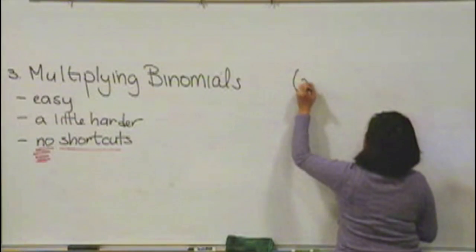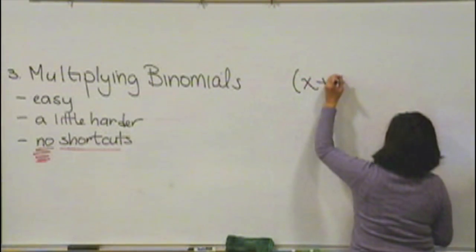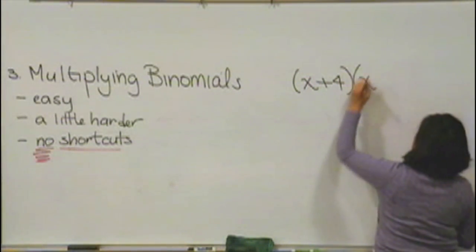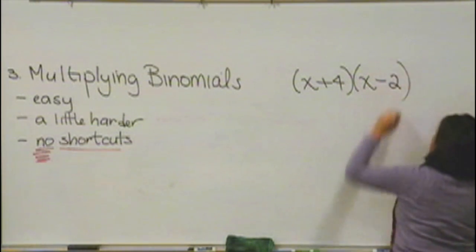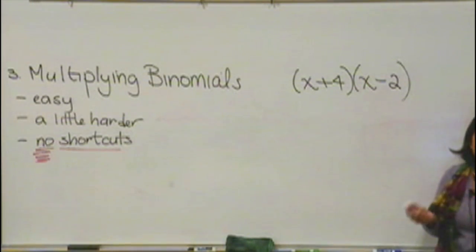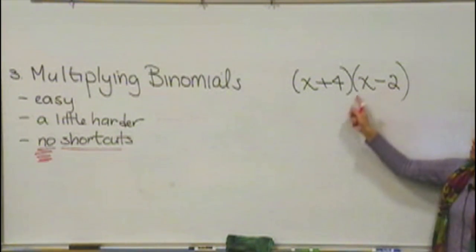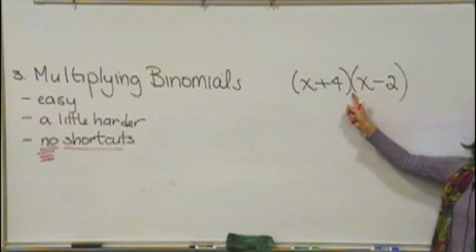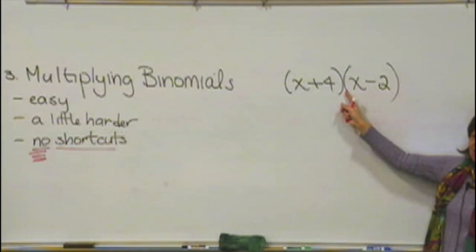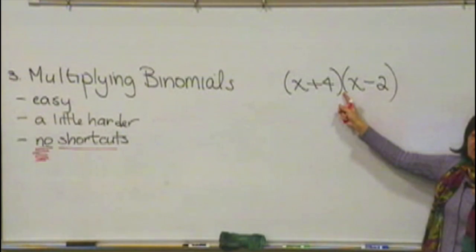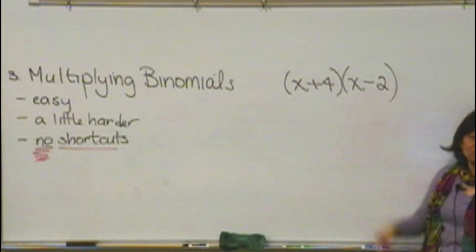So, for example, x plus 4 times x minus 2. What we would like to do is multiply these together. How do we know we're multiplying them? Because when we look in between these parentheses, we don't see any symbol. We don't see a plus sign, so we're not adding. We don't see a minus sign, so we're not subtracting. When they're right next to each other, that means we're multiplying.